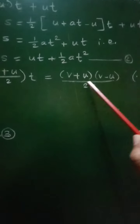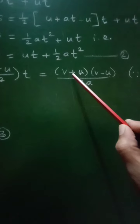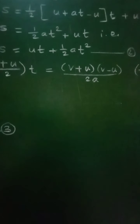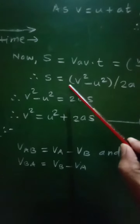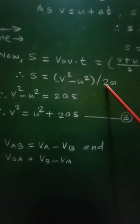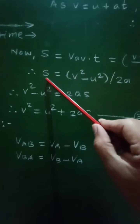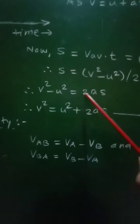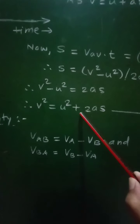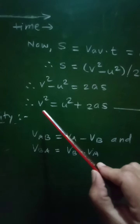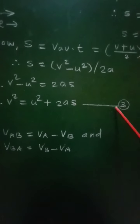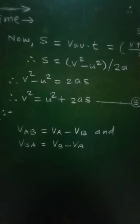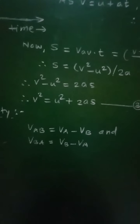Now, (v + u)(v − u) represents v² − u², similar to (a + b)(a − b) = a² − b². So we can write S = (v² − u²) upon 2a. Therefore, 2a is shifted to the left, giving 2aS = v² − u², and rearranging, v² = u² + 2aS — equation number 3. This equation gives the third equation of motion, that is the third kinematical equation.